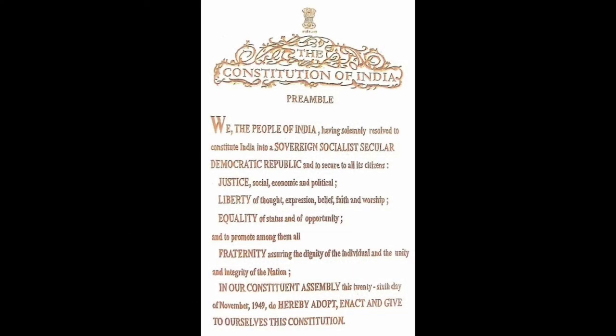The Constitution of India Preamble: We, the people of India, having solemnly resolved to constitute India into a sovereign, socialist, secular, democratic republic and to secure to all its citizens Justice — social, economic and political — Liberty of thought, expression, belief, faith and worship, Equality of status and of opportunity, and to promote among them all fraternity, assuring the dignity of the individual and the unity and integrity of the nation. In our Constituent Assembly, this 26th day of November 1949, do hereby adopt, enact and give to ourselves this Constitution.